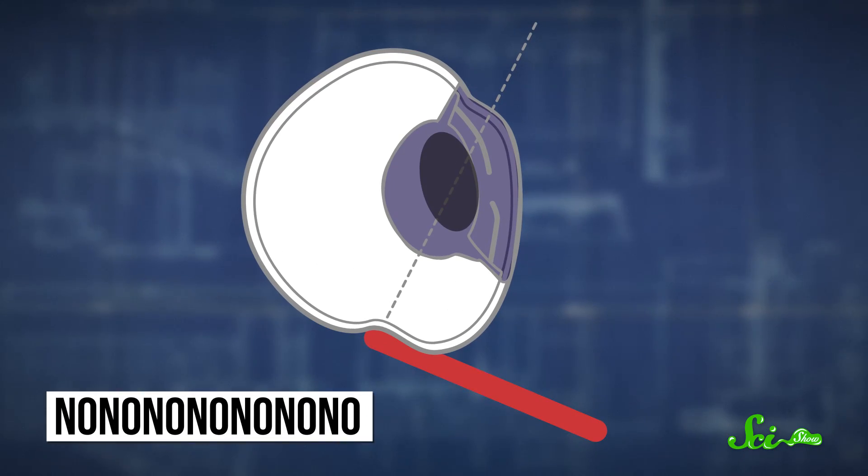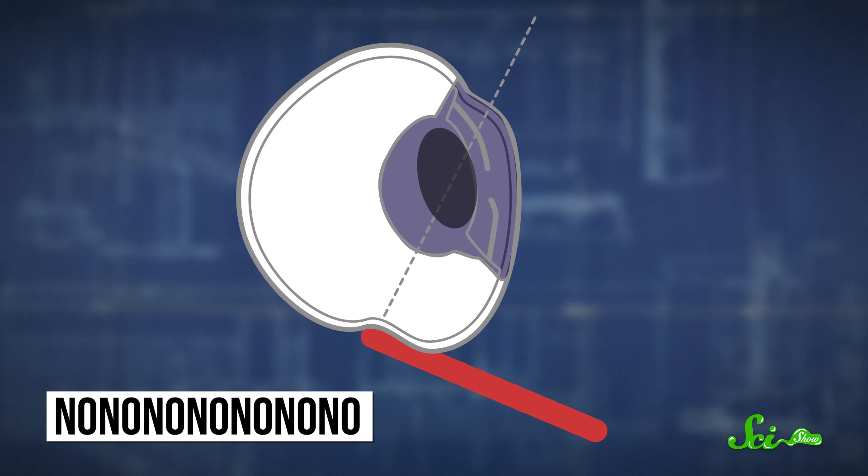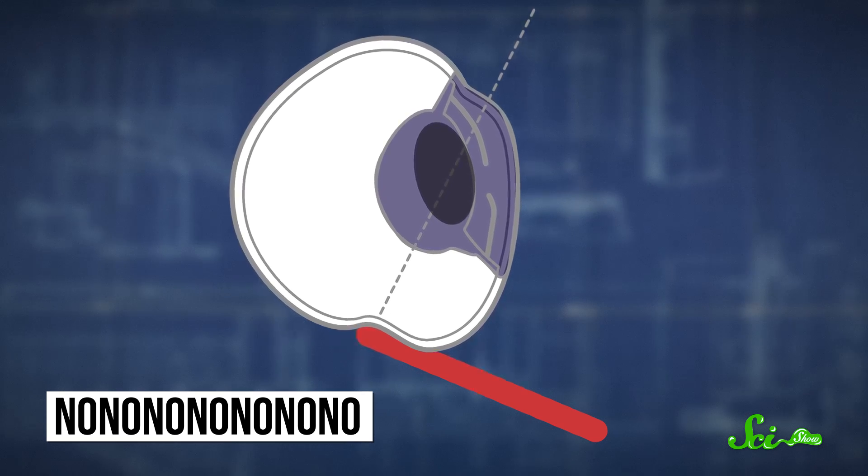Back in the 1660s, Isaac Newton experimented with this by sticking a giant metal pin into his eye socket to press on the back of his eye. Why? Isaac Newton, you're supposed to be a smart guy.